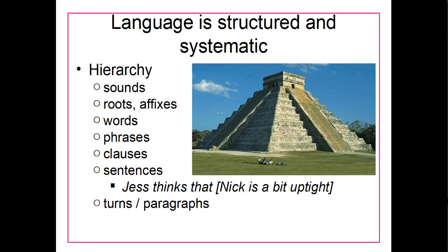Another way that language is structured and systematic is that we have a hierarchy of layers. Language at its most basic is a set of sounds. These sounds combine to form roots or affixes — smaller parts of words. An affix would be something like the past tense ending we stick on verbs, and the root would be the verb itself. These parts of words combine to form full words, full words can form phrases, phrases can form clauses, clauses can form sentences, and sentences can form larger things like paragraphs, speeches, or stories.